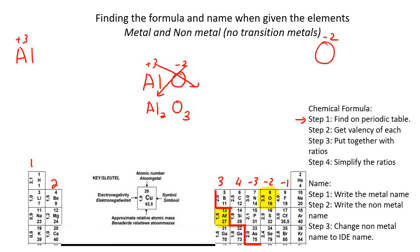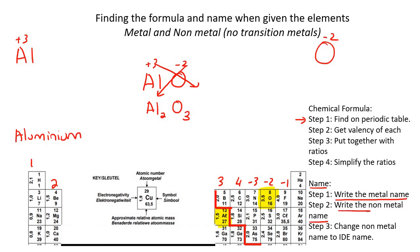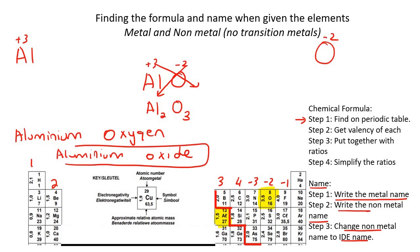To get the name: step one, write down the metal's name — that's aluminium. Step two, write down the non-metal — oxygen. Step three, change the non-metal to the IDE name. So it's going to be aluminium oxide. That's the name — pretty easy.